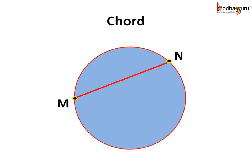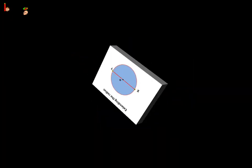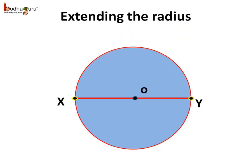A straight line which connects two points lying on the circle is called a chord. Point M and point N are situated on the circle. If we connect point M and N with a straight line, then it would be a chord. Is radius a chord? No. One end point of the radius is the center of the circle, which is point O, and it is not situated on the circle. Hence, the radius is not a chord. If we extend the radius, it will meet at a point on the circle, and now it is a chord — chord XY.